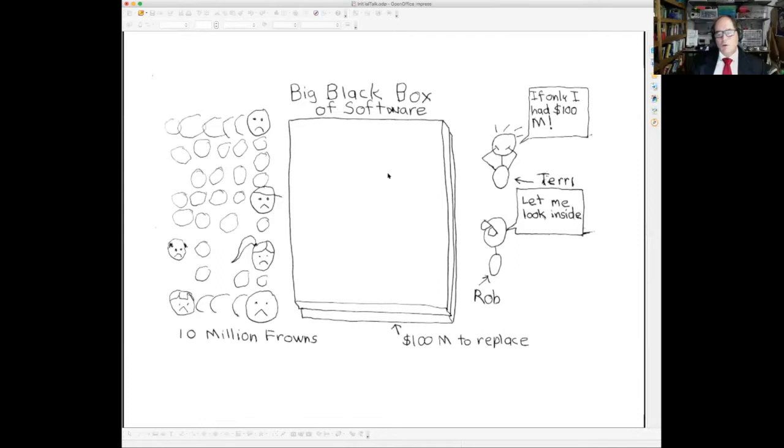So once upon a time, there was a boy named Rob, and that's me with the glasses down there. And he worked for a woman named Terry and Terry worked at a federal agency and she had a big problem. She had a big black box of software that she believed it would cost a hundred million dollars to replace. And this software was extremely important.